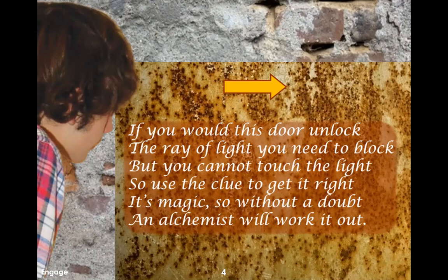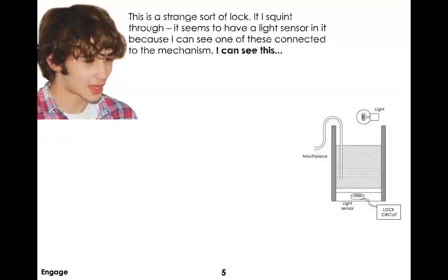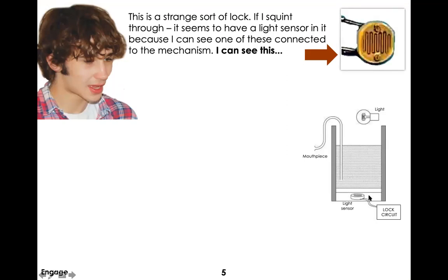It's basically saying: if you really understand chemistry, what you're going to need to do is perform some type of chemical reaction that will cause a light inside a special chamber to be blocked. Once that light is no longer shining onto a special sensor, the door will unlock. There's a special circuit with a light-detecting sensor and a light bulb, all set inside the wall behind glass so you can't reach in and touch it. The light shines down through liquid in a glass container, and as the light hits the sensor the circuit is complete and the door remains locked.